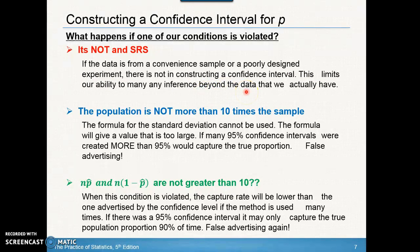Without a simple random sample, we can only make conclusions about the specific data we have, not about the population. You would want to state that this data is not a simple random sample and note the limitation. What happens if the population is not more than 10 times the sample size? The standard deviation formula gives a value that's too large because the values aren't independent. So if many 95% confidence intervals were created, more than 95% would capture the true population — basically false advertising — and we can't proceed.